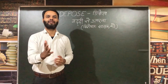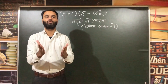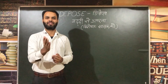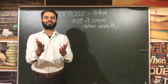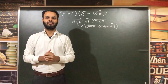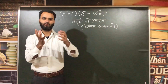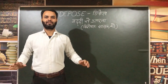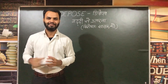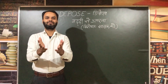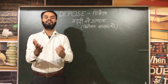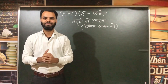Next word is Depose, and this word means Gaddi se utarna, visheshta shasak ko — to remove someone, especially a ruler, from power. Friends, to remember Depose: Didi was sitting on a throne (gaddi) and Papa came and made her step down. Depose means Gaddi se utarna visheshta shasak ko.